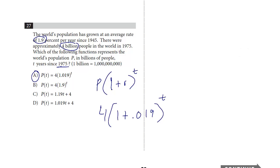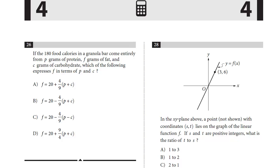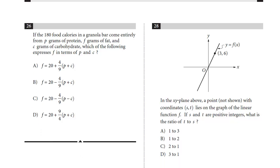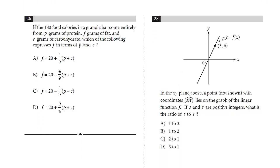All right, let's take a look at number 28. In the xy plane above, a point not shown with coordinates st lies on the graph of the linear function. If s and t are positive integers, what's the ratio of t to s? So we have a point that's not shown that is on this line.